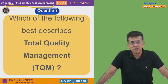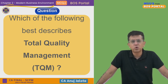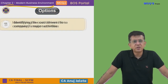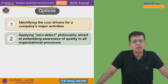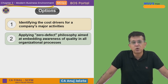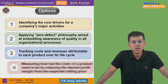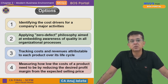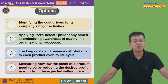Which of the following best describes Total Quality Management? The four options are: first, identifying the cost drivers for a company's major activities; second, applying zero defect philosophy aimed at embedding awareness of quality in all organizational processes; third, tracking the cost and revenues attributable to each product over its life cycle; fourth, measuring how low the cost of a product needs to be by reducing the desired profit margin from the expected selling price.